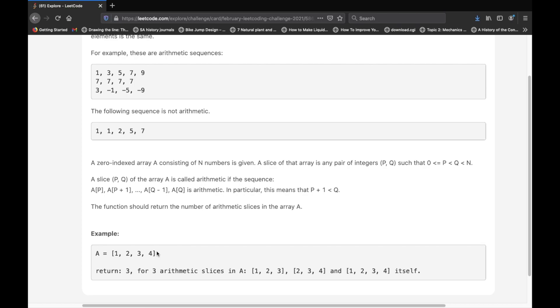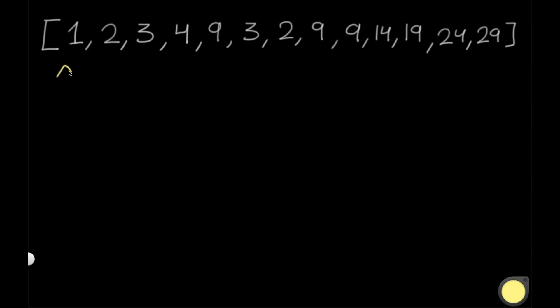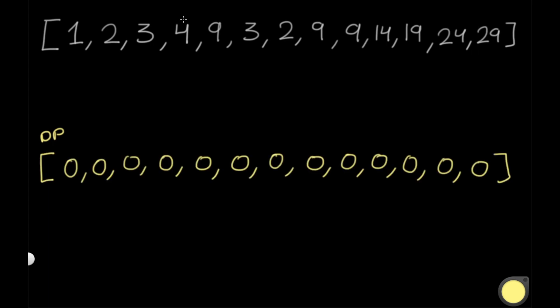Let's look at a demonstration of what this looks like. This over here is going to be our array A. We're going to create a dynamic programming array with the same number of elements, initialized with all zeros. We're going to always be looking at slices with a length of 3. The first slice considers the first three elements: 1, 2, and 3. We want to determine if 1, 2, and 3 makes an arithmetic sequence — and the answer is yes. The difference between 1 and 2 is 1, and between 2 and 3 is 1, so the difference is the same. So we assign a value of 1 inside our dynamic programming array at that position.